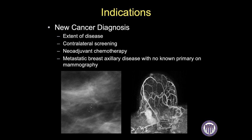In the setting of a new cancer diagnosis, breast MRI is superior to mammography for identifying and demonstrating the extent of disease. This is an example of a 51-year-old woman with screen-detected calcifications measuring 13 millimeters on mammography, showing ductal carcinoma in situ, or DCIS, on stereotactic biopsy. Subsequent MRI for extensive disease workup demonstrated multiple spiculated masses surrounding the area of biopsy.